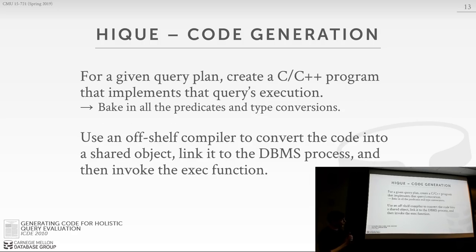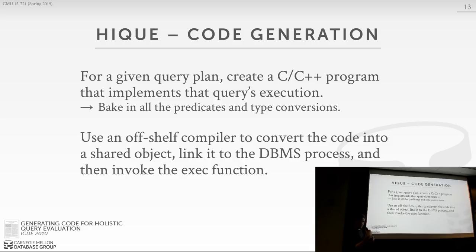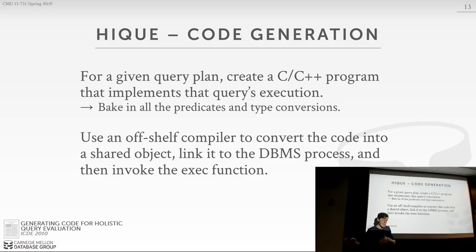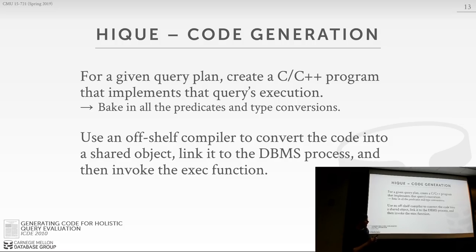For transpilation or source-to-source compilation, there was a system out of University of Edinburgh about a decade ago called Haiku. This was one of the first prototypes in academia in the modern era that would take a query plan, generate C code, actually fork GCC, run the source code through that, and then GCC would spit out a shared object, which they'd link back into their database program to run the query. For this one they were using an off-the-shelf compiler. You pay a penalty for forking, obviously, and we'll see one commercial system that actually did it the Haiku way. I think this is the wrong way to do it because the exec part is super expensive.